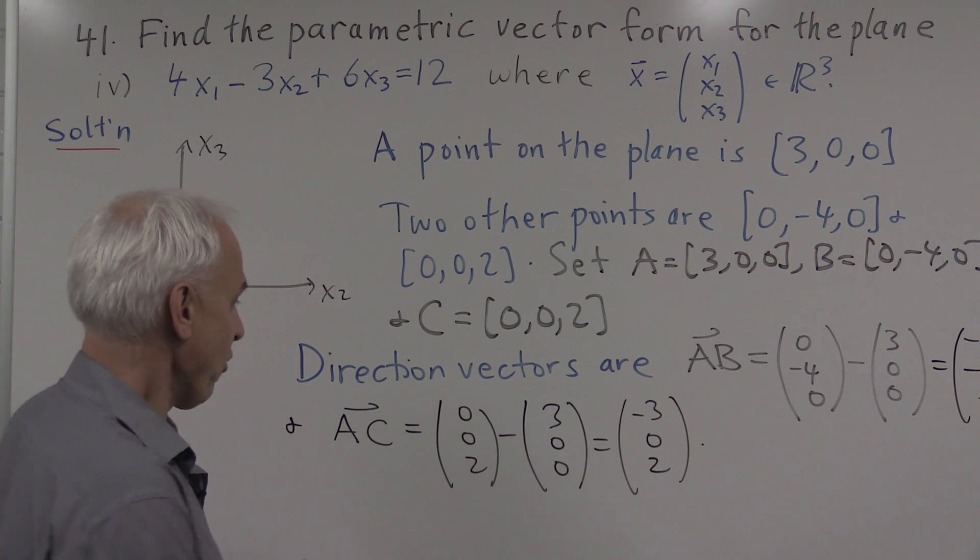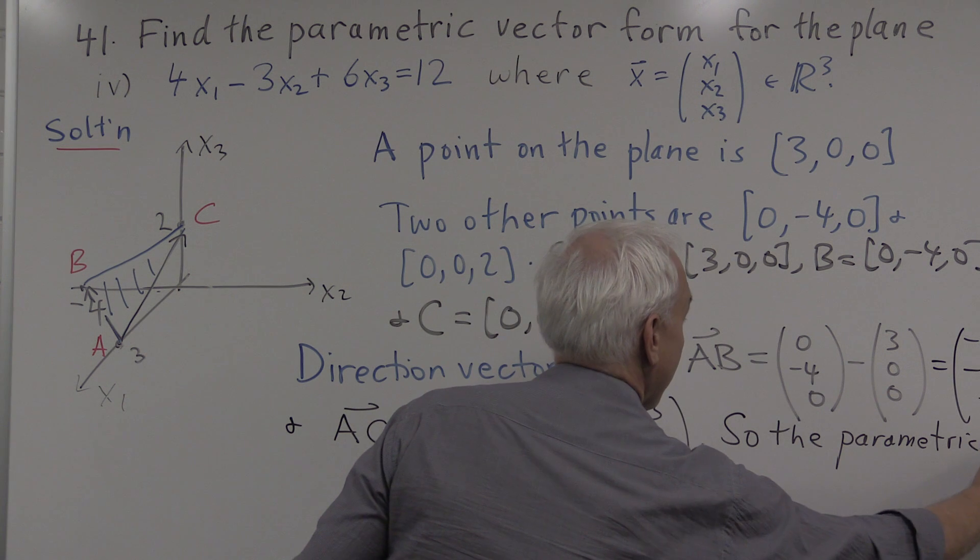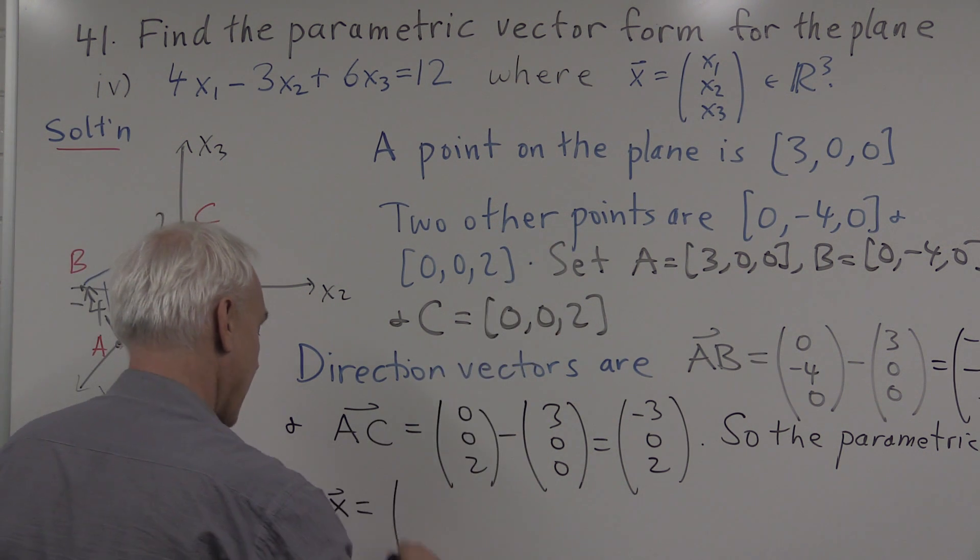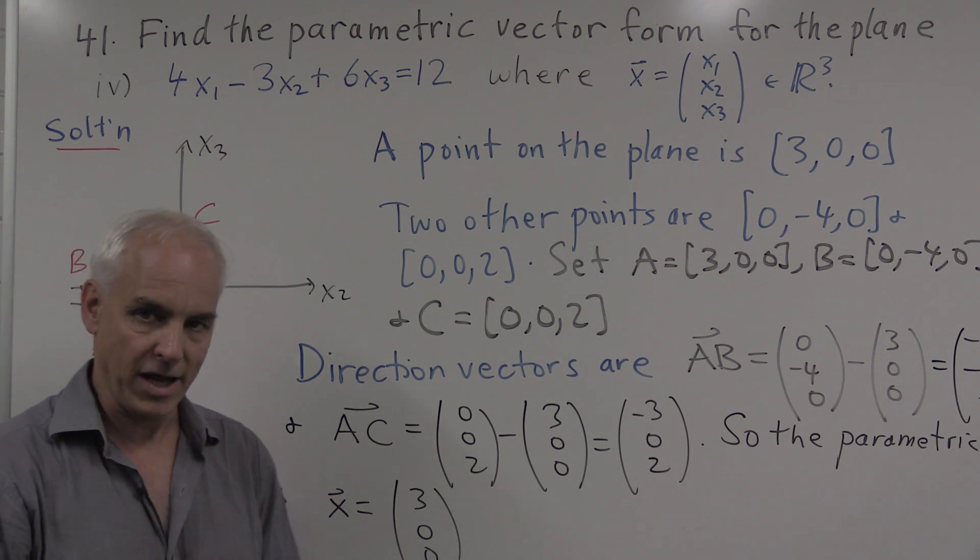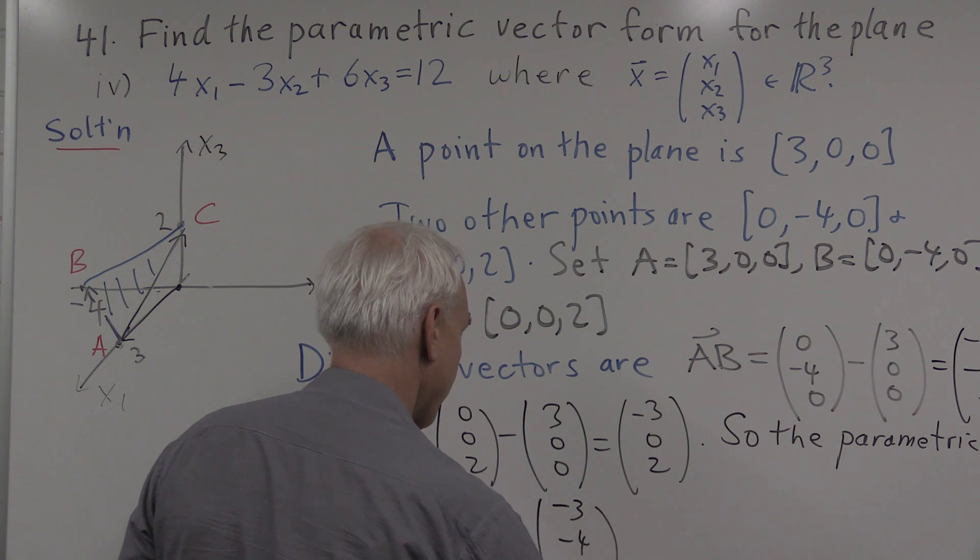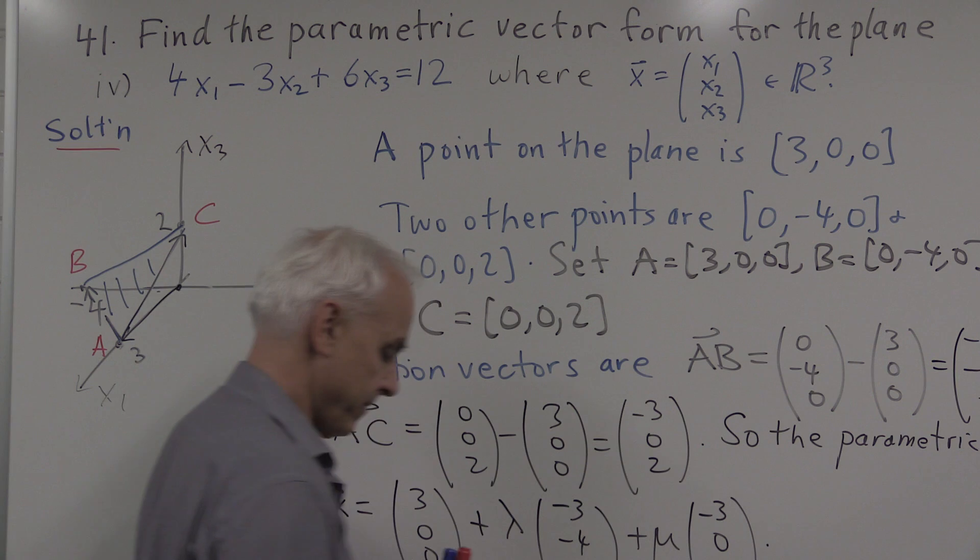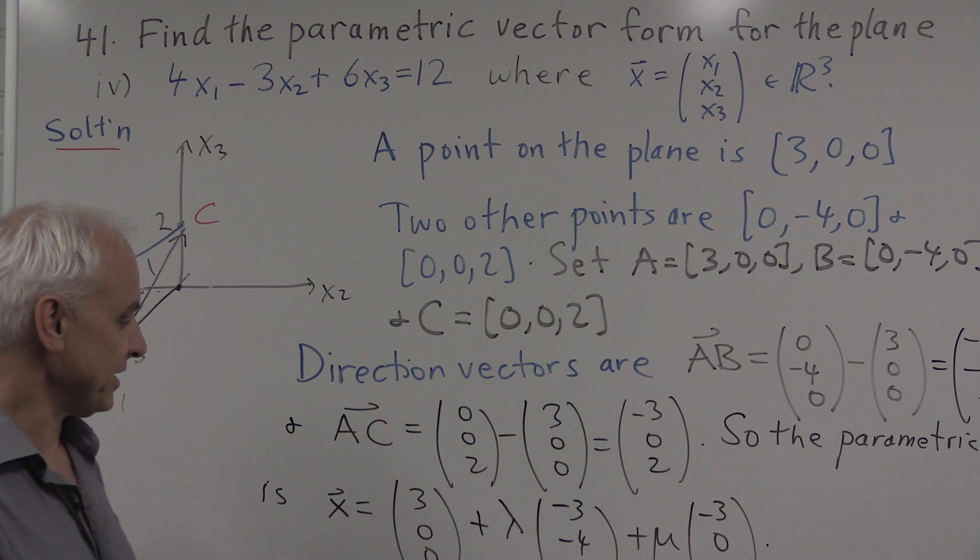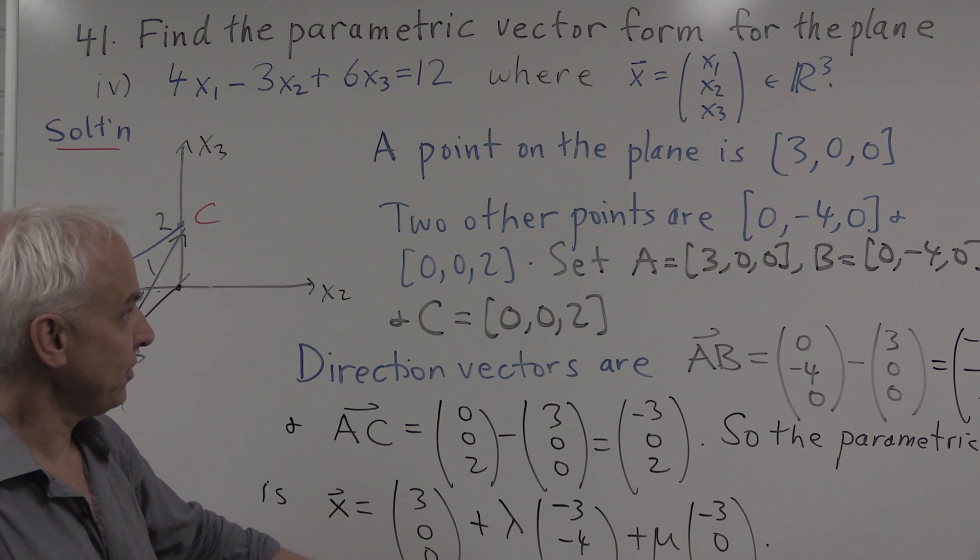So we can write down the parametric form. The parametric equation is x equals, first we want to get to that point, so we'll write down its coordinate vector. So first we get to the point A. And then we add a multiple of AB, which is minus three, minus four, zero. And another multiple of AC, which is minus three, zero, two. So if you plug in different values of lambda and mu into this equation, you're going to get different points which lie on the plane. So this is a parametric vector form for the plane from the Cartesian form. So we've shown how to go from the Cartesian form to the parametric form.